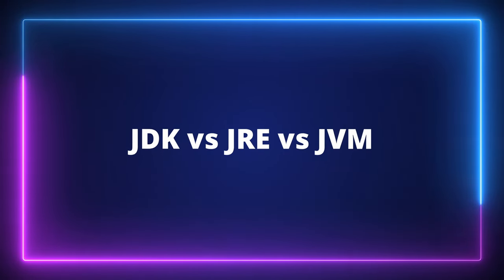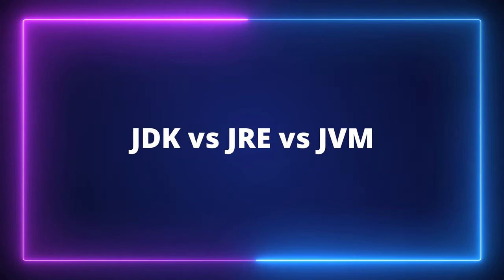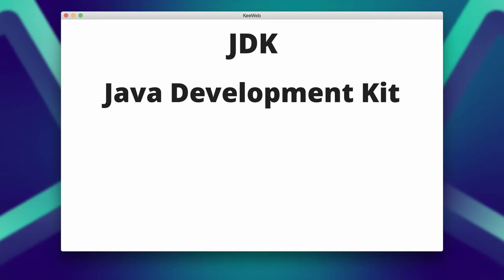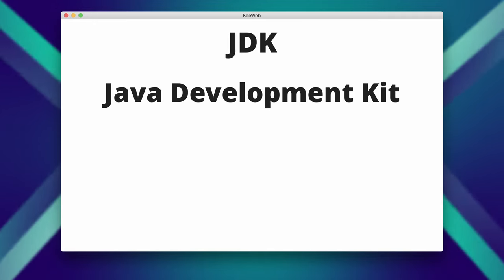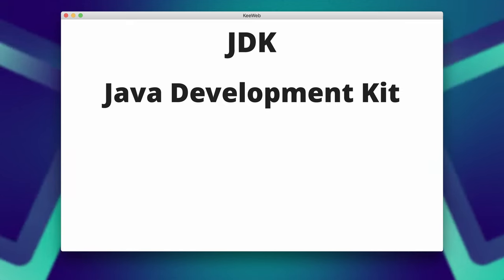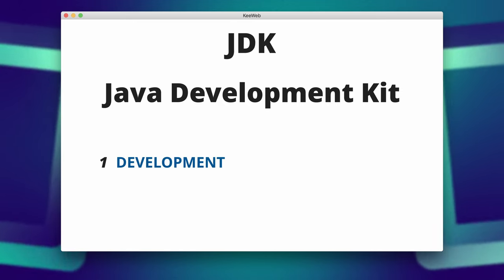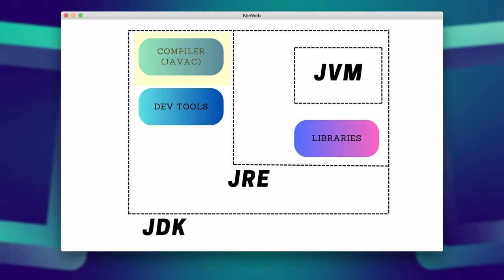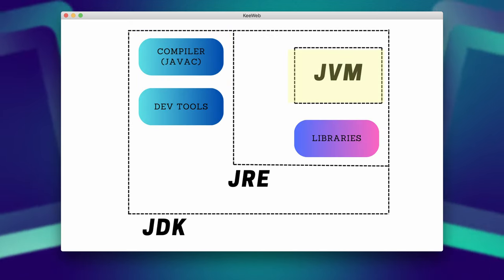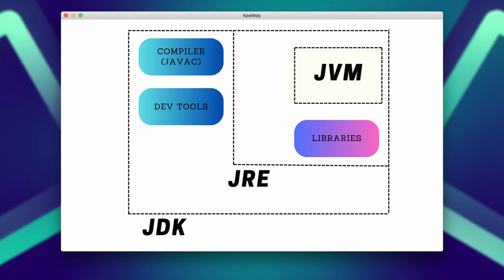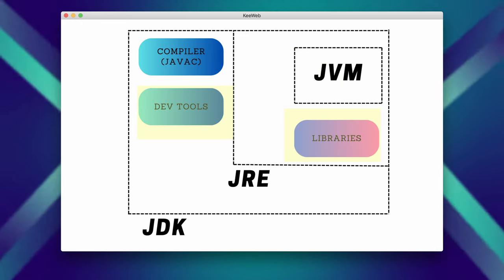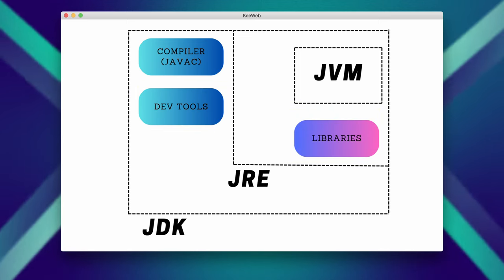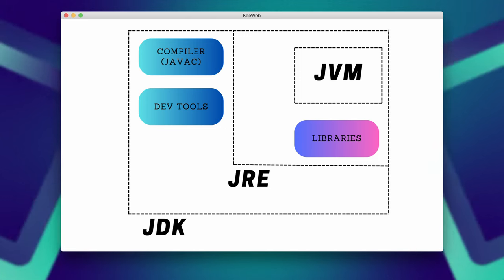What is the difference between JDK, JRE, and JVM? JDK stands for Java Development Kit. It is a software development kit that provides tools necessary for developing, compiling, and debugging Java applications. It includes the Java compiler, the Java Virtual Machine, and various libraries and utilities needed for Java development. The JDK is primarily used by developers to write and compile Java code.